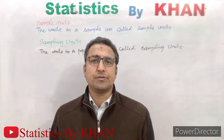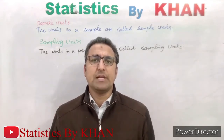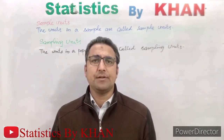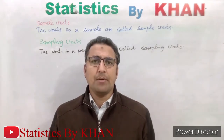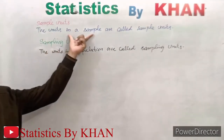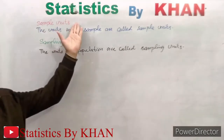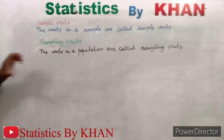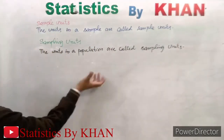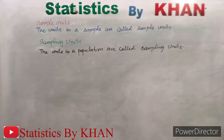There is a technical difference between sample units and sampling units. Sample units correspond to the units in the sample, while sampling units are the units in the population from which a sample or samples can be selected. From the sampling units, sample units can be drawn, which is why sampling units are considered the population units.